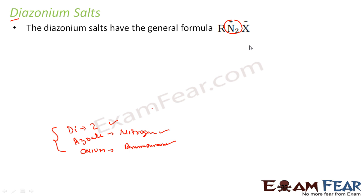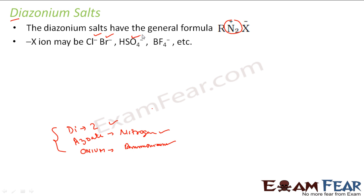The formula is R-N2-X, and this X can be chlorine, bromine, HSO4⁻, BF4⁻, etc. So that is the typical formula R-N2-X. Di means 2, azoate means nitrogen — something which has 2 nitrogens and whose property is similar to ammonium salt.